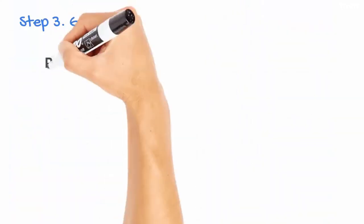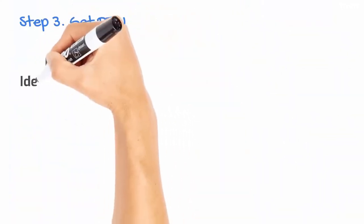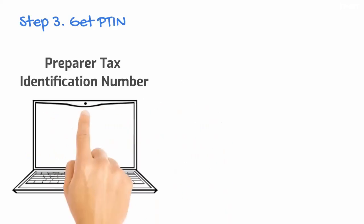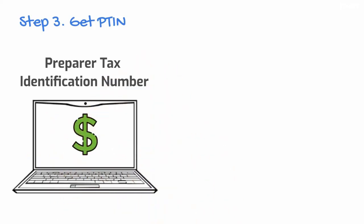Step 3. Get PTIN. The Preparer Tax Identification Number, which is required for all paid tax preparers. This starts on the IRS website and needs annual renewal for a fee.